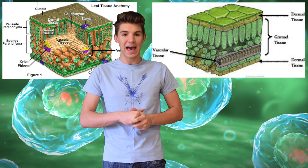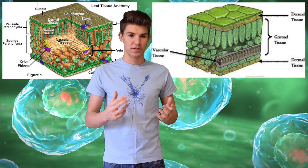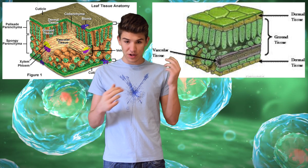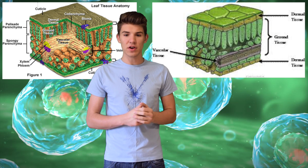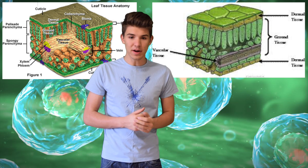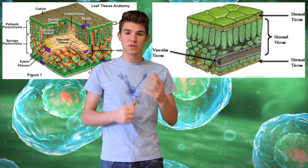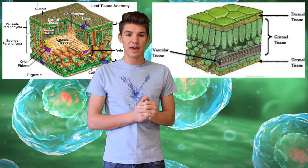The xylem tissue has two unique cells: tracheids, the water conductors, and vessel members. The phloem tissue has companion cells, which are very complex, as you can see in the diagram. Parenchyma cells and fibers are also a part of both these tissues because, as mentioned before, they are for support, and when you are transporting water you need a lot of support.